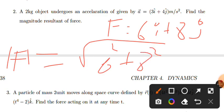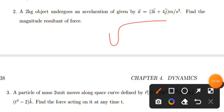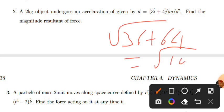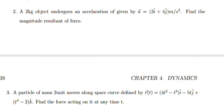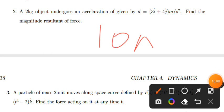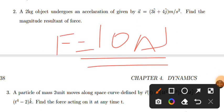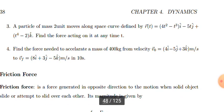The magnitude of force equals the square root of 6 squared plus 8 squared = sqrt(36 + 64) = sqrt(100) = 10. The magnitude of the resultant force is equal to 10 Newtons.